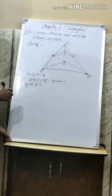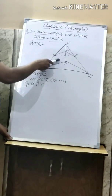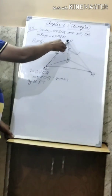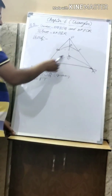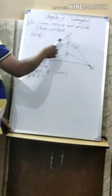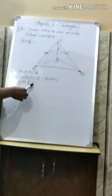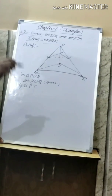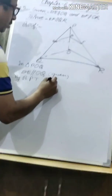Proof: Since DE is parallel to OQ, consider triangle POQ. By BPT, PE upon EQ equals PD upon DO. This is the first equation. Since DF is parallel to OR, consider triangle POR. By BPT, PF upon FR equals PD upon DO. This is the second equation.